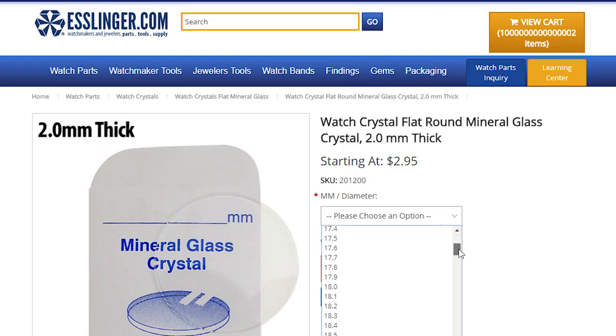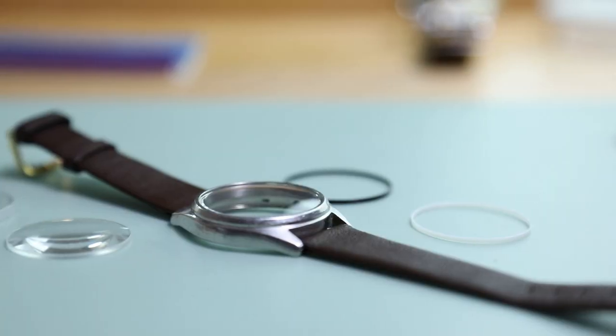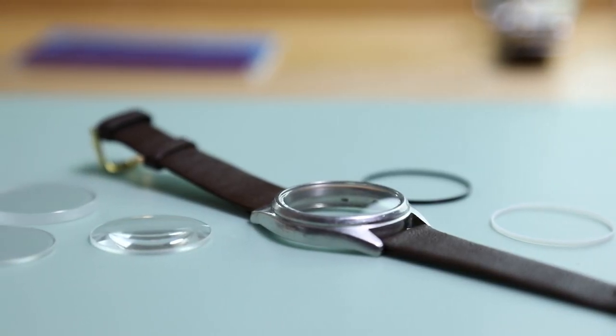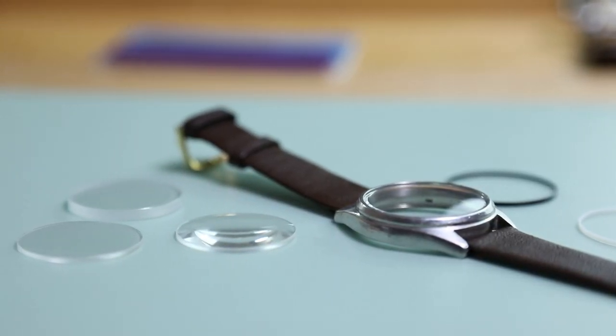Most crystals come in .1 millimeter increment sizes, but some styles only come in .5 millimeter increments. To learn more about watch repair or how to replace your own watch crystal, check out other videos on our YouTube channel.